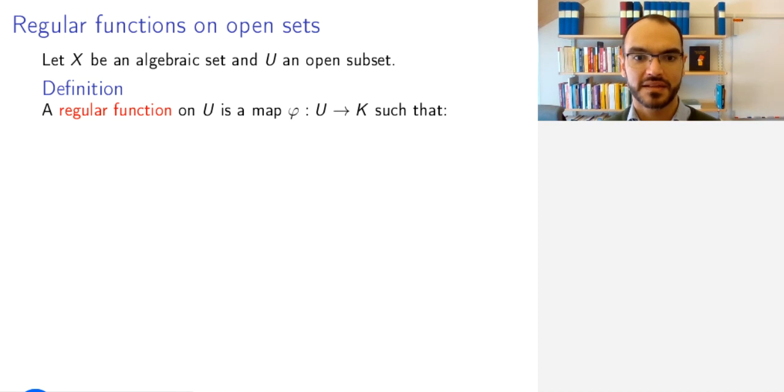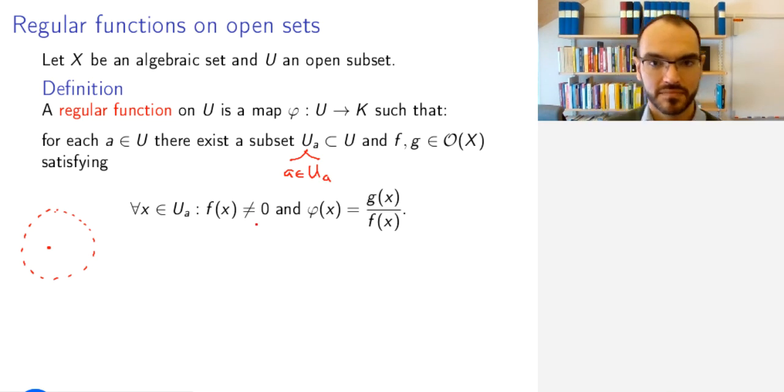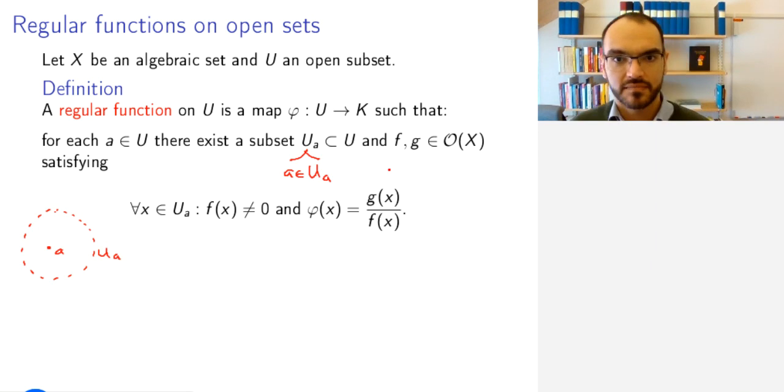If you have an algebraic set X and an open subset U, a regular function on U still is a map from this set to the base field K with the following property. For any point A, there exists an open neighborhood U_A that contains A, so that in U_A, there are polynomials F and G, or regular functions F and G, such that F doesn't vanish anywhere on U_A, and your map phi is the quotient of G with F in this neighborhood U_A.